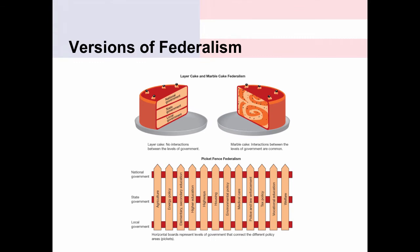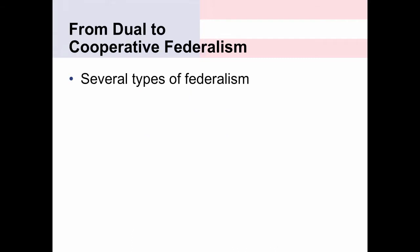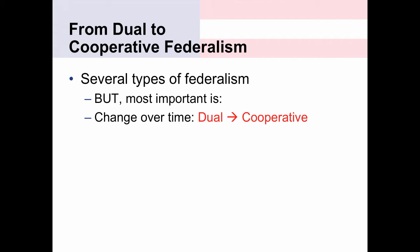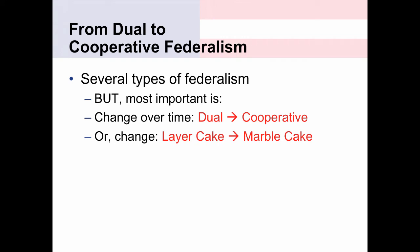Federalism is often portrayed with different visuals. There's layer cake, marble cake, and picket fence federalism. There's also coercive versus cooperative federalism. You can see the cake and picket fence here. For this class, the most important thing is that there has been a change over time from what we call dual federalism to cooperative federalism. Another way to think about it is from layer cake to marble cake. The layer cake has layers separated by icing; the marble cake is all mixed in — those are roughly analogous to the two different types of federalism.